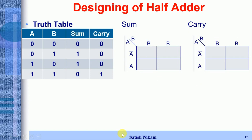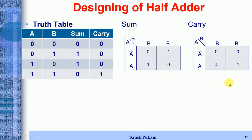Now we fill in the K-maps. When filling the K-map for Sum, we observe the Sum column from the truth table: 0, 1, 1, 0 — and fill those values in. Similarly, for the Carry K-map we observe the Carry column: 0, 0, 0, 1 — and fill those values in accordingly.